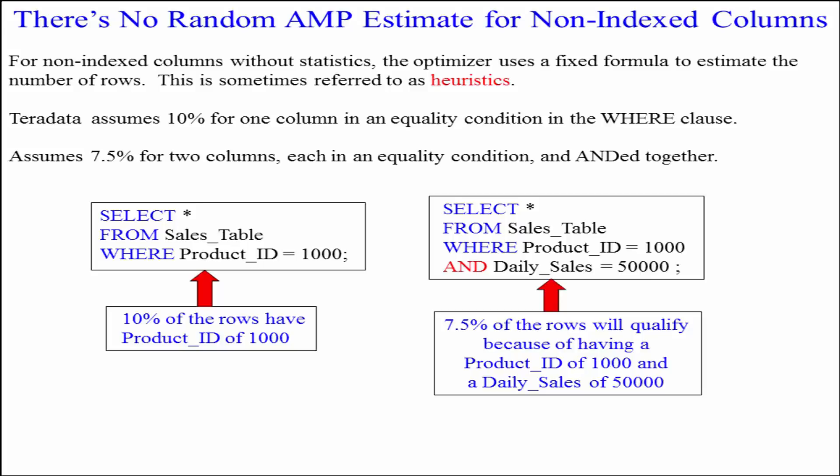Teradata assumes 10% for one column in an equality condition in the WHERE clause. So in our example here you can see: SELECT everything FROM sales table WHERE product ID equals 1000. Teradata assumes 10% of the rows will meet that condition because there's only one column in the equality condition.